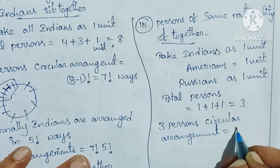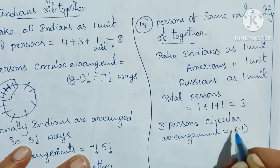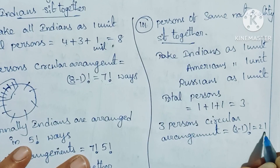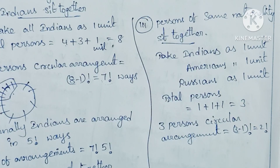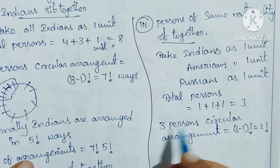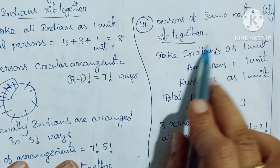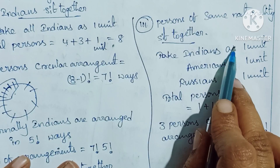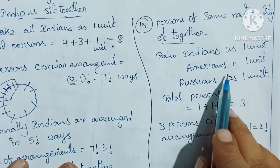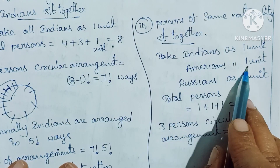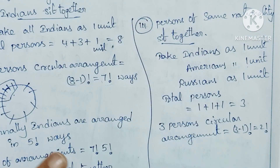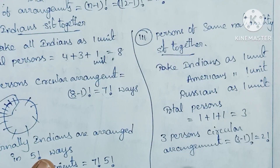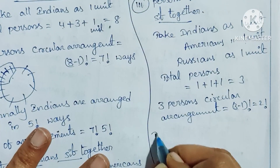Circular arrangement of 3 units = (3−1)! = 2 factorial ways. Internally: Indians have 5 members, Americans have 4 members, and Russians have 3 members.